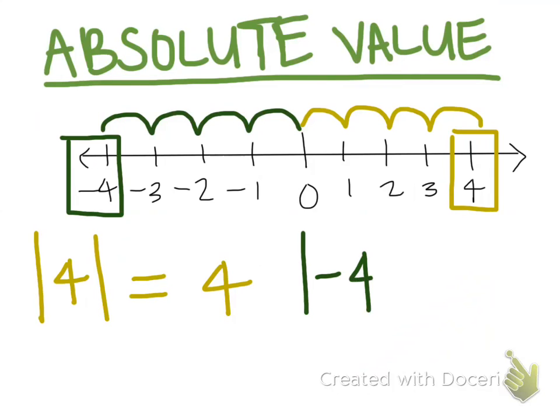here's how I would write that. The absolute value of negative four is, and because we already counted negative four is one, two, three, four spaces from zero, then we know the absolute value of negative four is also four.